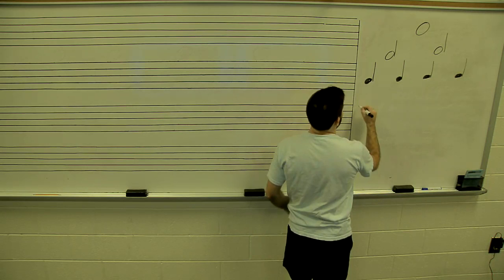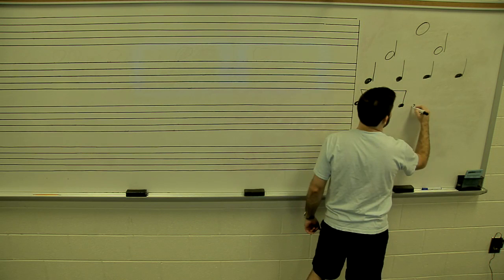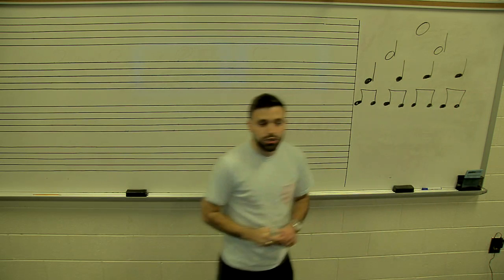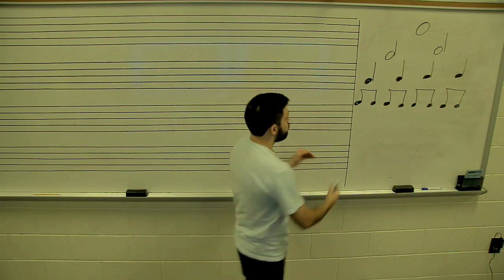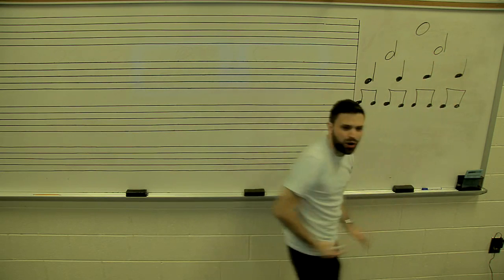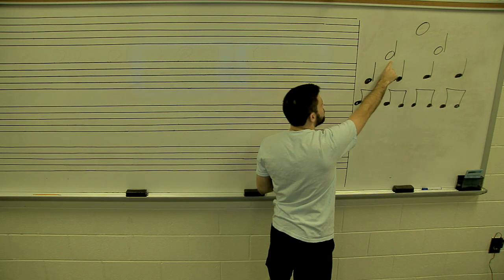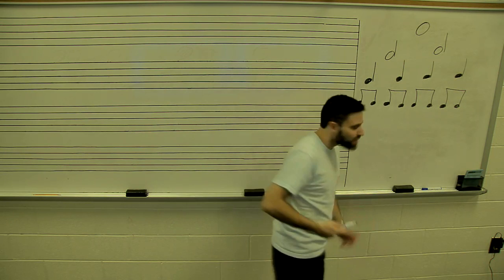Now we're going to continue on to eighth notes, beamed together in groups of two. Looking at this tree, there are two eighth notes per quarter note and four eighth notes per half note. That makes sense because a half note is two quarters, so you have to have four eighths — it's like math and ratios.